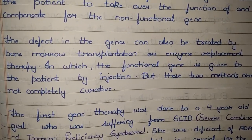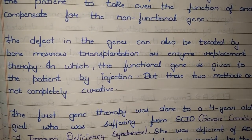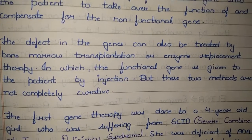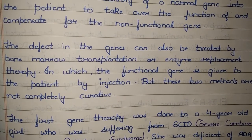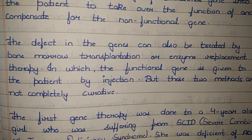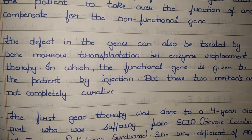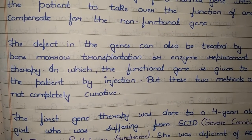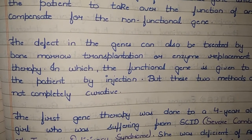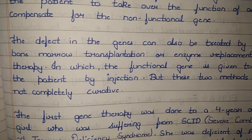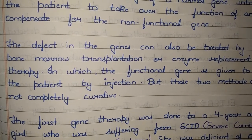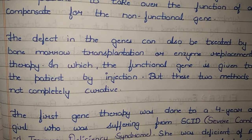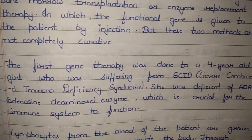Gene defects can also be treated by bone marrow transplantation and enzyme replacement therapy, in which the functional gene is given to the patient by injection. However, these two methods are not completely curative — they do not provide permanent cure, so they are not widely preferred.